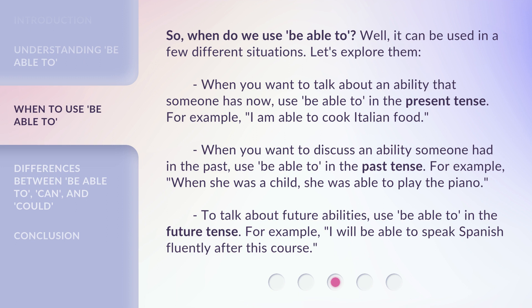When you want to discuss an ability someone had in the past, use 'be able to' in the past tense. For example: 'When she was a child, she was able to play the piano.' To talk about future abilities, use 'be able to' in the future tense. For example: 'I will be able to speak Spanish fluently after this course.'